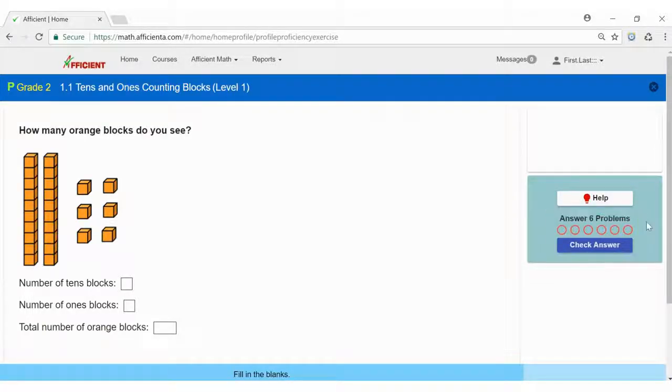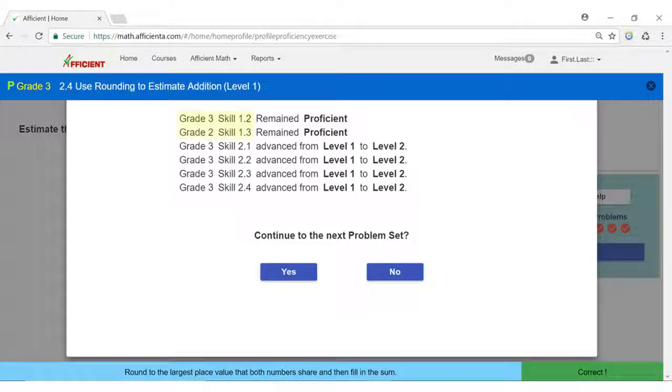Proficiency rounds are usually six questions at a time and each problem is a separate skill. The first few skills may come from prior chapters or even prior grades, and the last few will come from the current chapter you're working on.